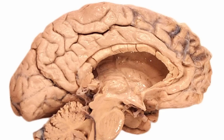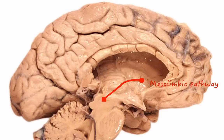Dopaminergic neurons mainly concentrate in certain areas in the brain — there are four major pathways. The first pathway is the mesolimbic pathway, where neurons project from the ventral tegmental area to the nucleus accumbens in the ventral striatum. This is the pathway involved in activities such as motivation, pleasure, and reward.